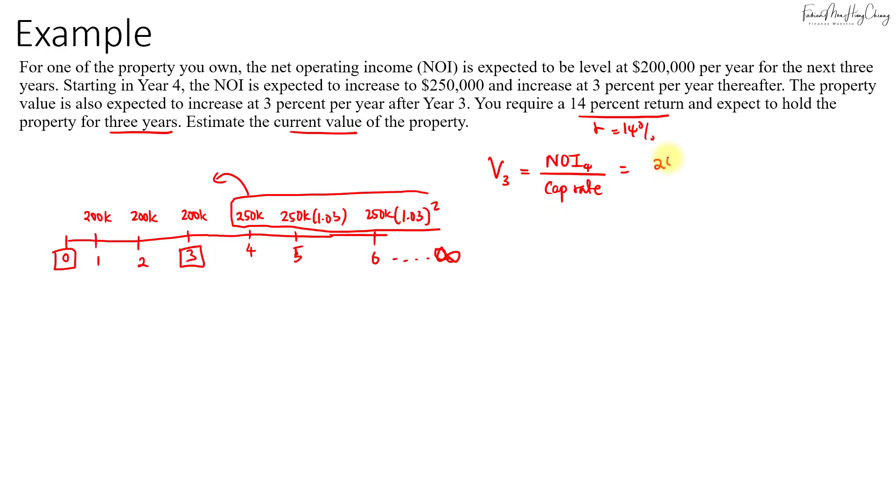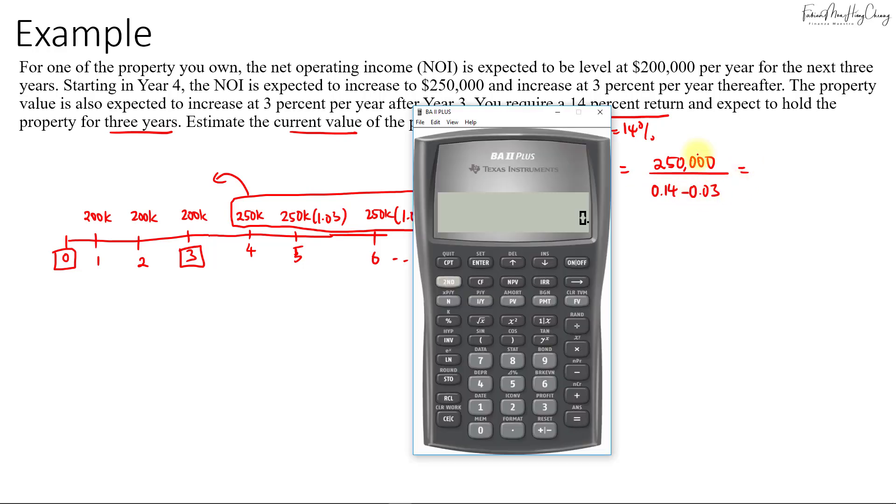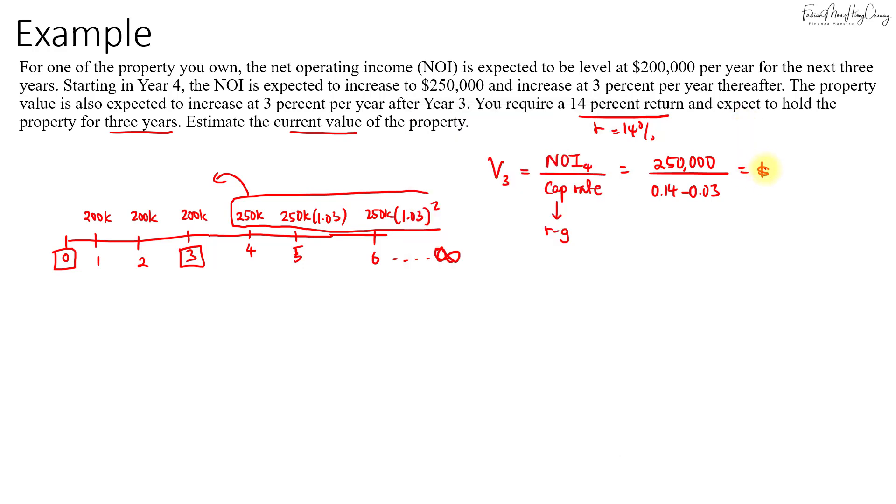The NOI in year four will be $250,000 divided by the cap rate, which is given as R minus G. R here is 14% and the growth rate is 3%, so that's 11%. If you calculate that, that's $250,000 divided by 0.11, which equals $2.27 million or $2,272,727.